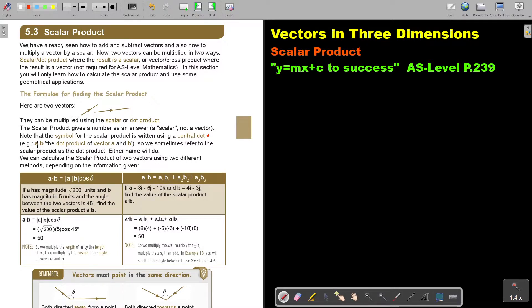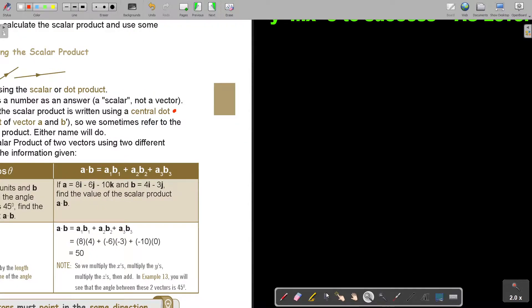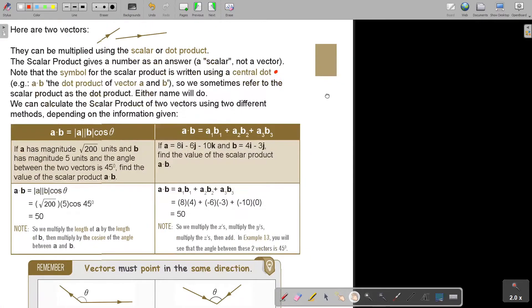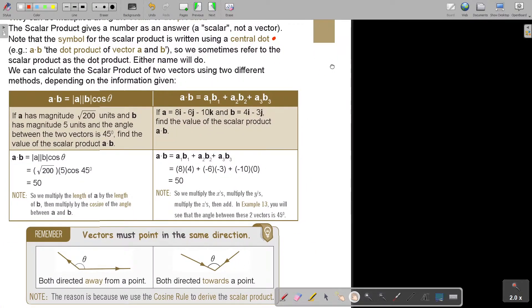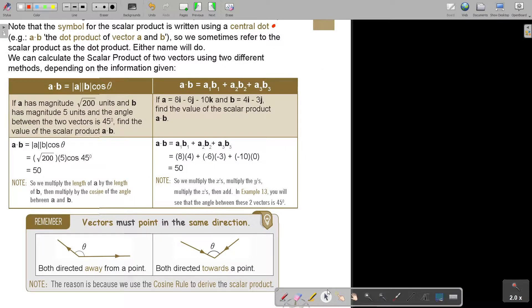For example, A and then the center dot and then B. So, you say the dot product of vector A and B. We sometimes refer to the scalar product as the dot product. Either name will do. We can calculate the scalar product of two vectors using two different methods, depending on the information given.